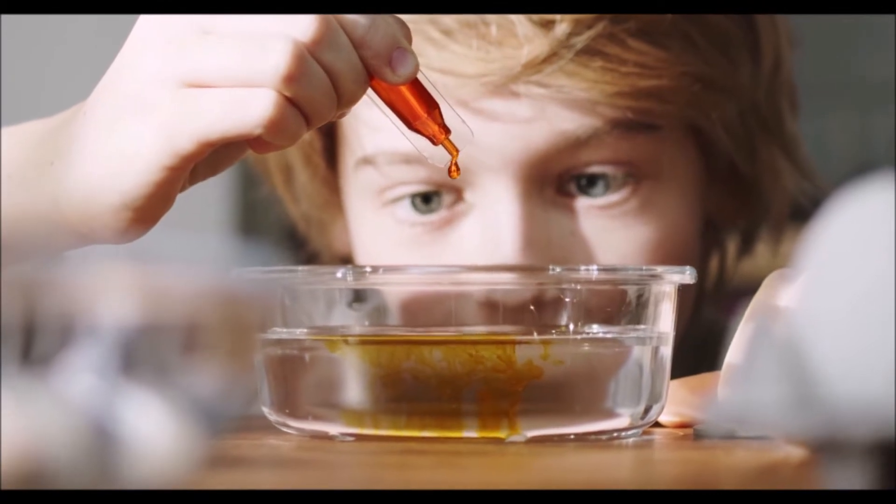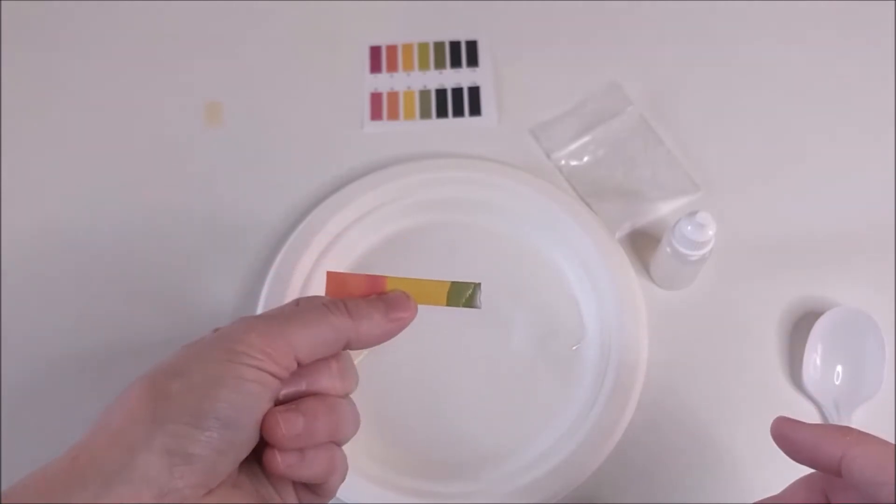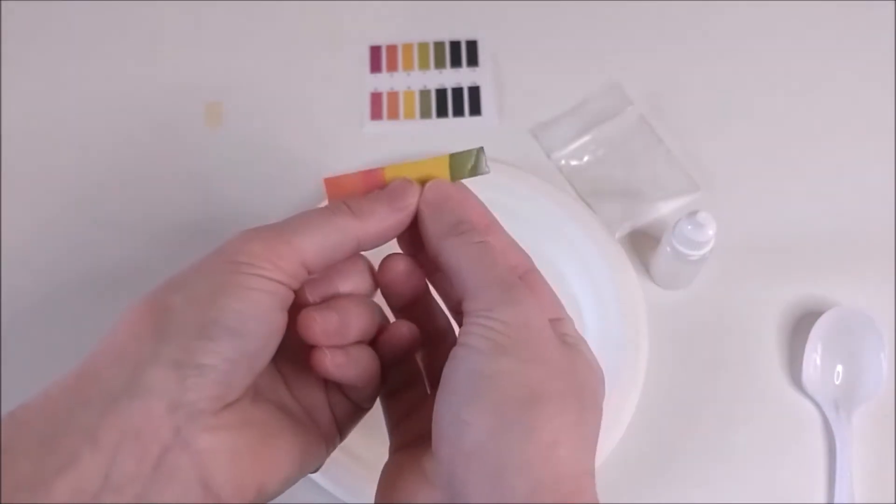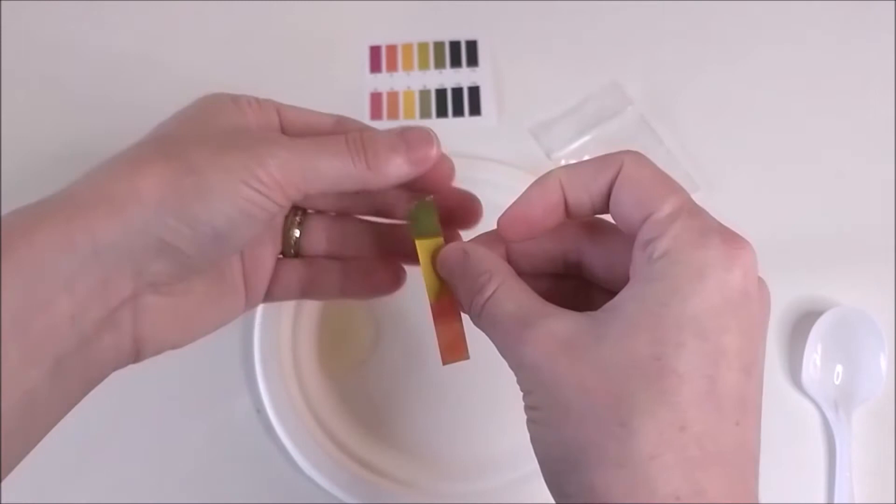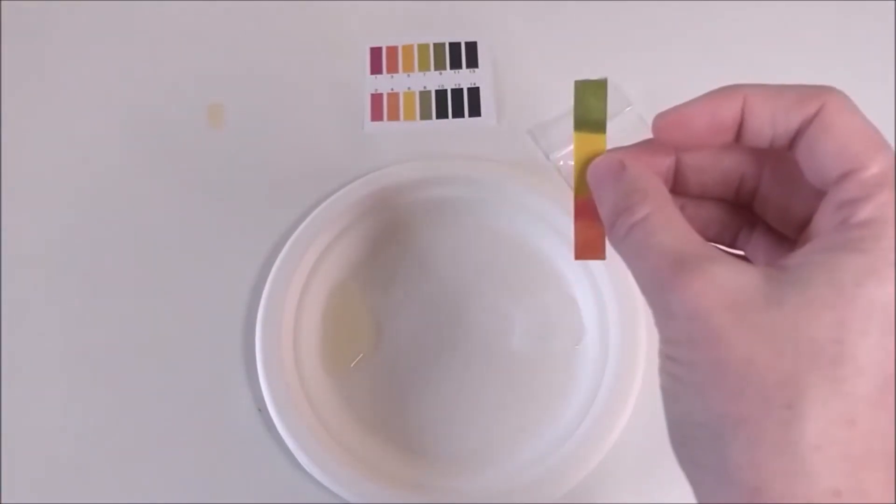We've worked with pH before when we used pH strips to measure it, but today we're going to use a different method. We're going to use a vegetable that has a natural pH indicator in it. That vegetable is the red cabbage.